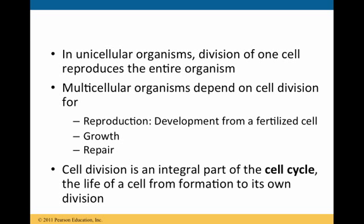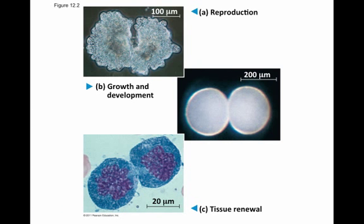In terms of the life of a cell, it goes from its own formation to its own division. Cell division is important — it's important for reproduction, for growth and development, and also for tissue renewal. Reproduction distinguishes the living from nonliving things, whether it occurs in unicellular or multicellular organisms.